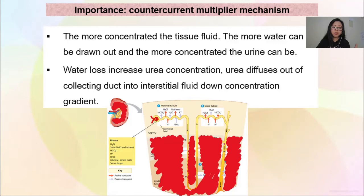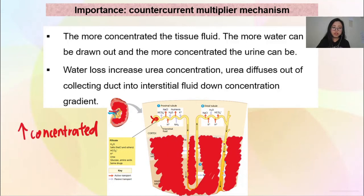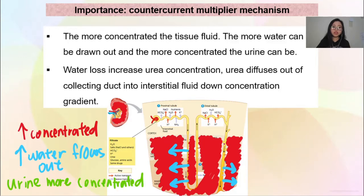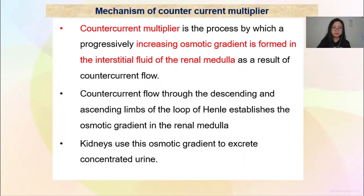Once again: the more concentrated the tissue fluid, the more water that can be drawn out, and the more concentrated the urine will be. Water loss will increase the urea concentration — so sekarang banyak urea dalam filtrate — and urea will diffuse out of the collecting duct into interstitial fluid down the concentration gradient. This counter current multiplier is the process by which a progressively increasing osmotic gradient is formed in the interstitial fluid of the renal medulla as a result of counter current flow.